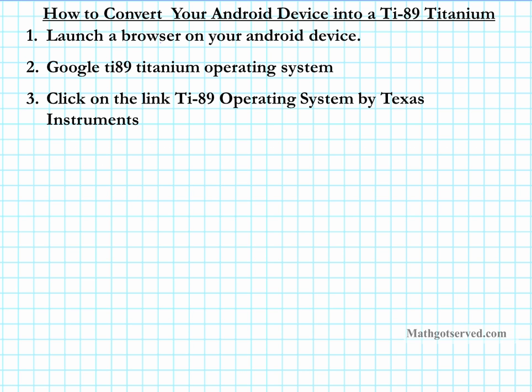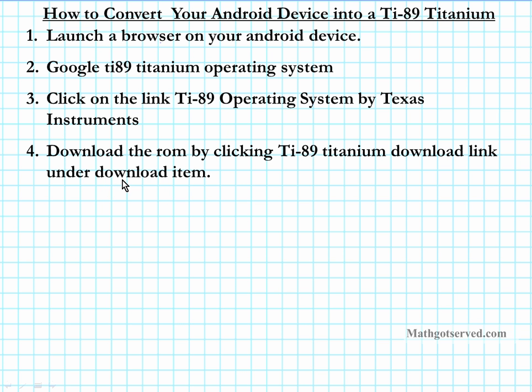The address bar should say education.ti.com/en and then it goes on. It's going to take you directly to the download window where the downloadable file will be made available. Look under the tab that says 'Download Item' — you're going to see the TI-89 Operating System download link. To the right of it, it will tell you the version, which is 3.1, and the size, which is about 1,367 kilobytes.